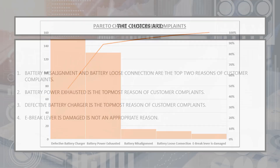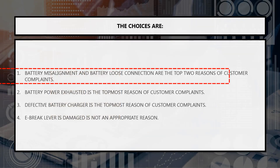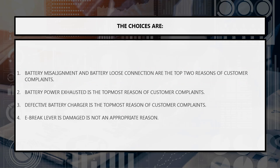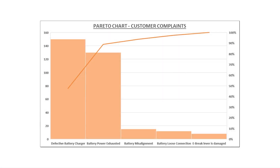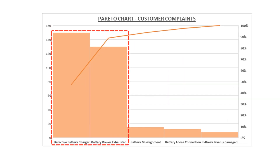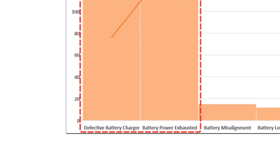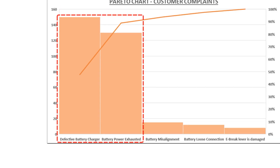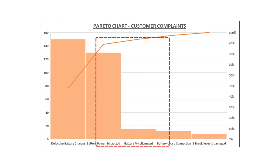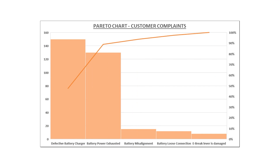The first option is battery misalignment and battery loose connection are the top two customer complaint reasons. Based on our Pareto analysis, the top two reasons are defective battery charger and battery power exhausted. So this is not the correct option.